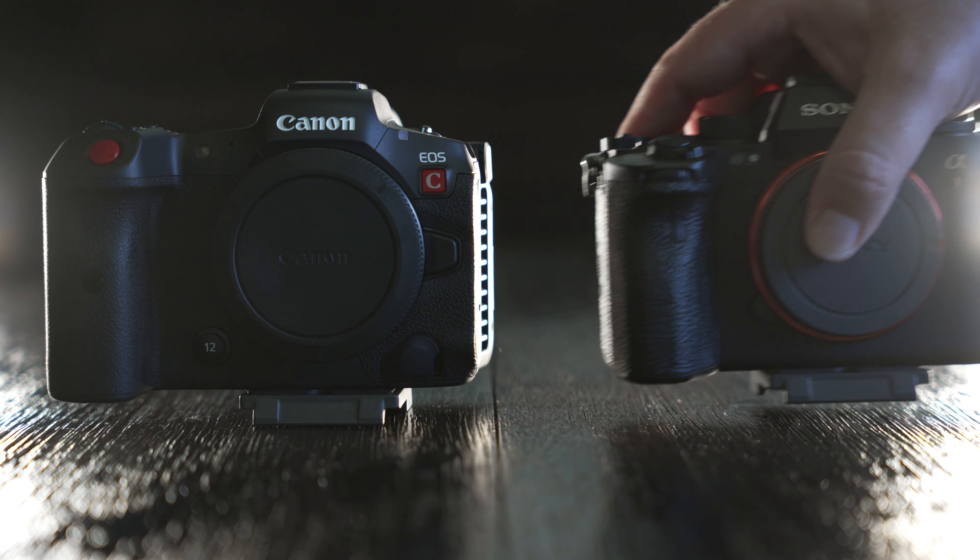The R5C has a 45 megapixel sensor, and that's not a back-illuminated sensor. However, the A1 comes with a 50 megapixel back-illuminated sensor. The R5C gives you 16-plus stops of dynamic range as long as you're recording in C-Log or raw. The A1 gives you 15 stops of dynamic range in log. The R5C does give you dual ISO; the A1 has no dual ISO, though you're good up to about 10,000 ISO. There is no IBIS in the R5C, but you do have IBIS in the A1.